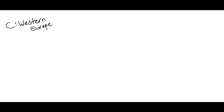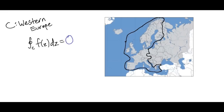Here's one for you. We're going to let C be the border of Western Europe. What do we get when we integrate a function around that border? We're going to get 0 — all the poles live in Eastern Europe, don't you know. Well, that's it for me. Thank you all very much, folks.